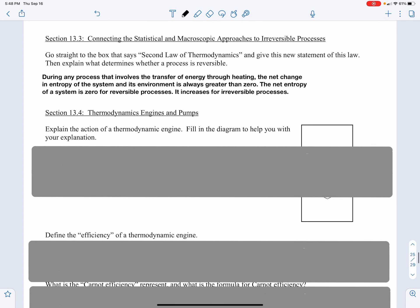What does that basically mean? For an irreversible process, the net entropy is always increasing. Disorder is always increasing for an irreversible process.